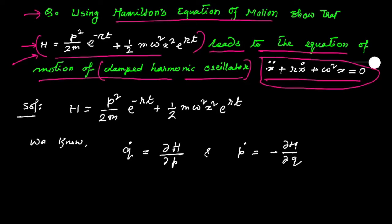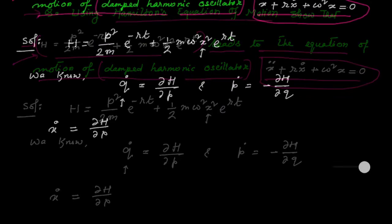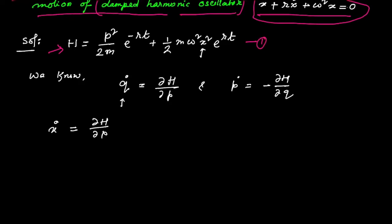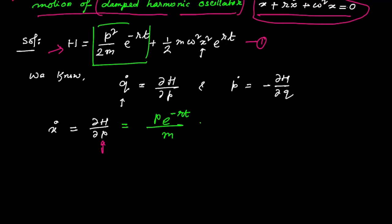In place of q̇ we find ẋ, since position is represented by x here. So ẋ = ∂H/∂P. Differentiating the Hamiltonian with respect to P gives ẋ = P · e^(−Rt) / m. The second term has no P dependence, so its derivative is zero. Call this equation 2.